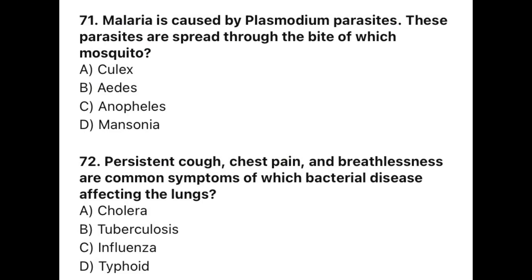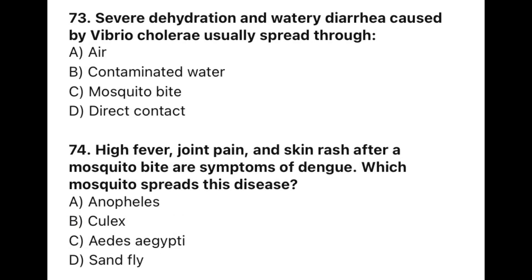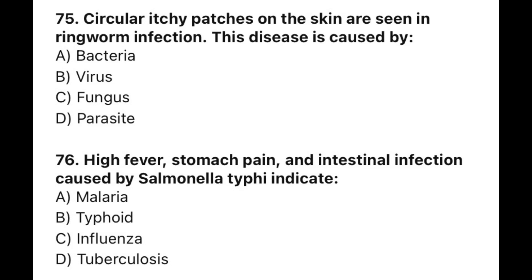Question 71: Malaria is caused by the Plasmodium parasite, spread through the bite of which mosquito? The correct option is C — Anopheles mosquito. Question 72: Persistent cough, chest pain, and breathlessness are common symptoms of which bacterial disease affecting the lungs? The correct option is B — tuberculosis. Question 73: Severe dehydration and watery diarrhea caused by Vibrio cholerae, usually spread through — the correct option is B — contaminated water. Question 74: High fever, joint pain, and skin rash after a mosquito bite are symptoms of dengue — which mosquito spreads this disease? The correct option is C — Aedes aegypti. Question 75: Circular, itchy patches on the skin are seen in ringworm infection. This disease is caused by — the correct option is C — fungus.